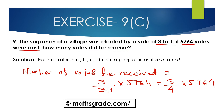Now canceling 4 with 5764. 4 ones are 4, 17 fours are — dividing 5764 by 4.